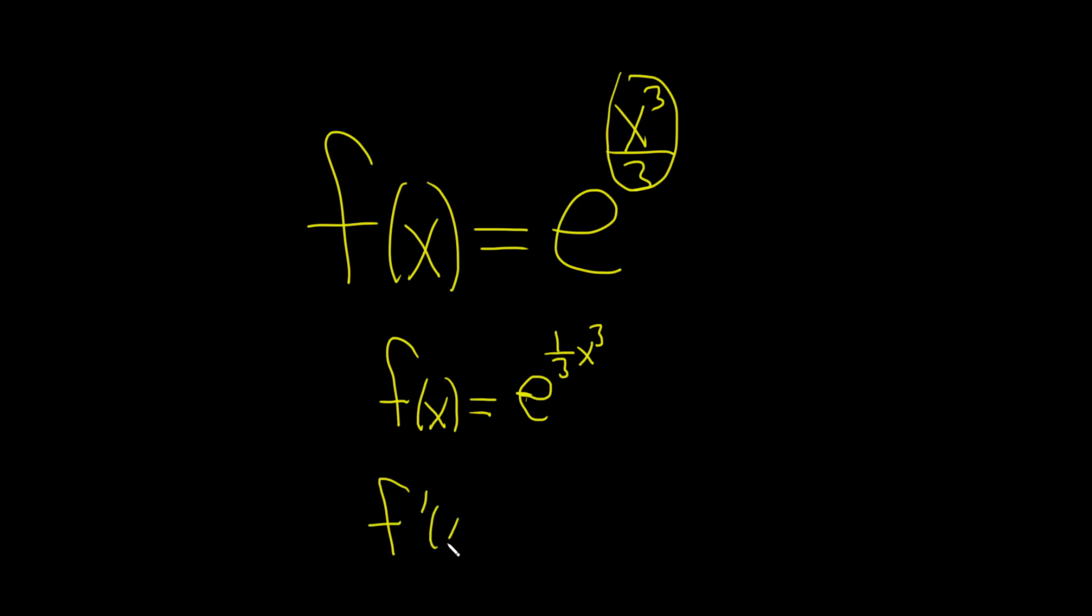f prime of x. So the derivative of e to the x is e to the x. So here it's e to this. So it's the derivative of the outside and you leave the inside untouched times, and now the chain rule says